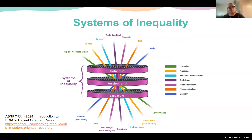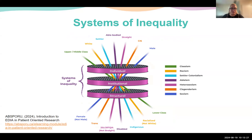In regards to the systems of inequality: at the top, you have the advantages that someone else may not. In the middle, the structures that are produced and maintain inequality, such as ableism. And at the bottom, people who are disadvantaged and do not have access — so basically they cannot access healthcare because of these disadvantages created by this system, such as homelessness and lacking technological access to e-healthcare.